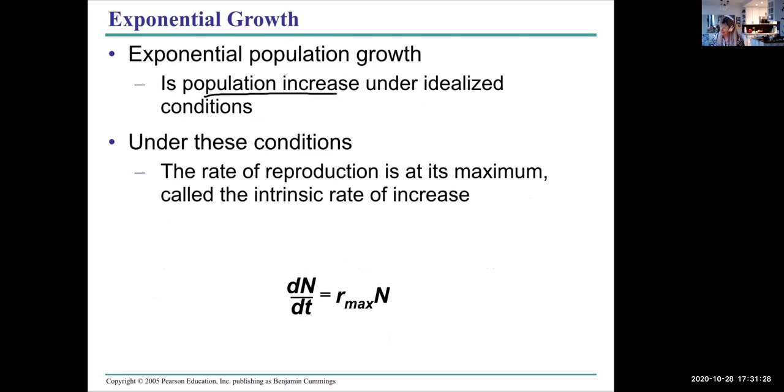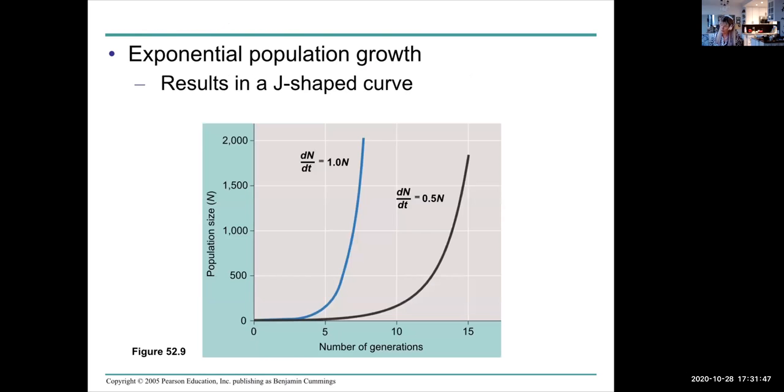Exponential growth is a population increase under very idealized conditions. There will be no limit of resources for exponential growth. Reproduction rate is at its maximum, known as r max. The intrinsic rate of increase isn't limited by anything, and that results in exponential growth, which will look like a J curve. In this case, little r is 1. In this case, little r is 0.5. When little r is 1, it's a very steep and very fast rate of growth. When the intrinsic rate is 0.5, it's a bit slower, but it's still exponential. On the y-axis is population size, or big N. On the x-axis is time, or in this case exhibited as number of generations. Exponential growth.